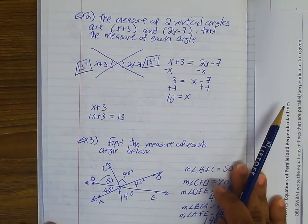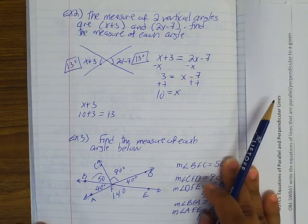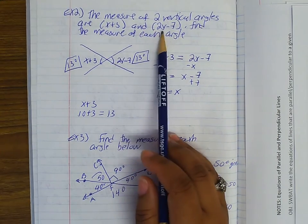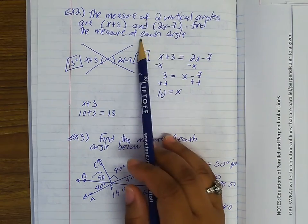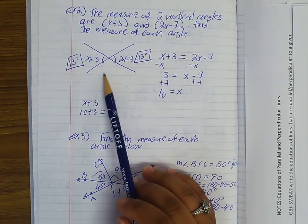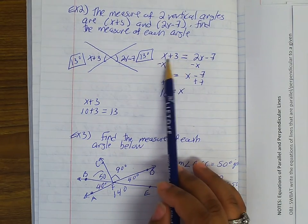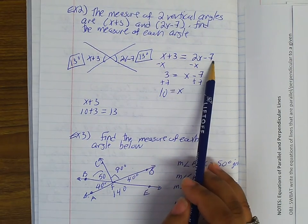Example 2. The measure of two vertical angles are (x+3) and (2x-7). Find the measure of each angle. So these are vertical angles, so I just put an equal sign between them: x+3 = 2x-7.